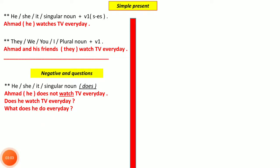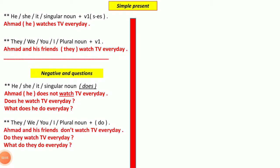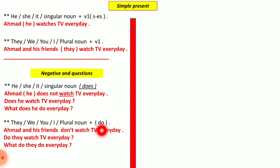The same rules apply when the subject is plural or they/we/you/I, but instead of 'does,' we use 'do.' So: 'Ahmed and his friends don't watch TV every day.' For questions: 'Do they watch TV every day?' For wh-questions: 'What do they do every day?' Remember, after 'does' or 'do,' always return the verb to its base form.